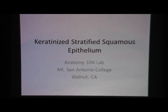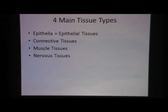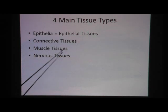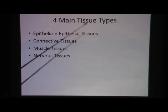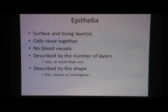Keratinized stratified squamous epithelium. These slides are made for Anatomy 10A lab at Mount San Antonio College. Let's review. We have four main tissue types in the body: epithelial tissue, connective tissue, muscle tissue, and nervous tissue. The whole entire body can be broken down into these four tissue types.